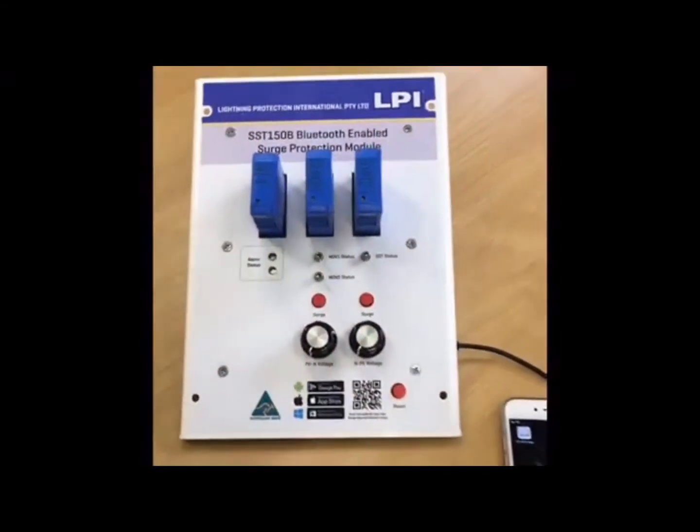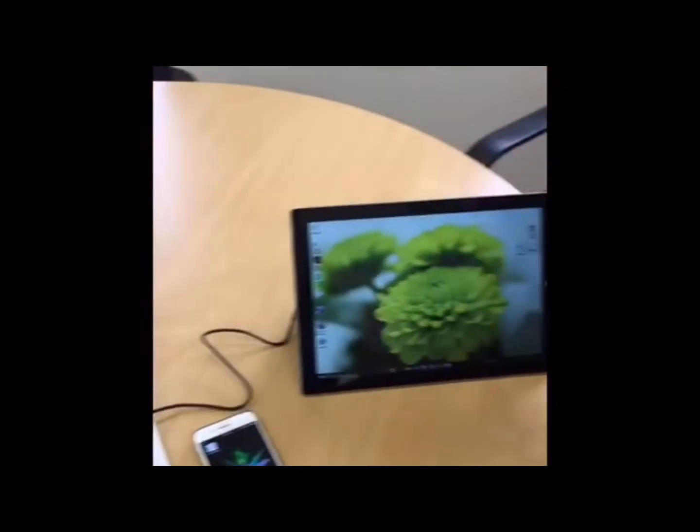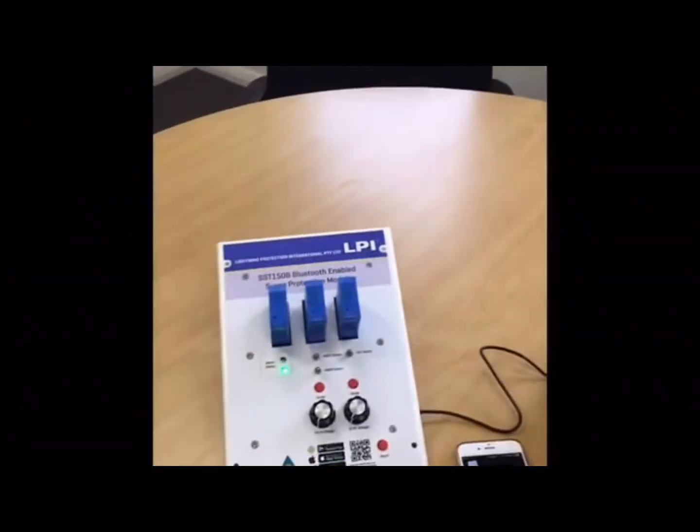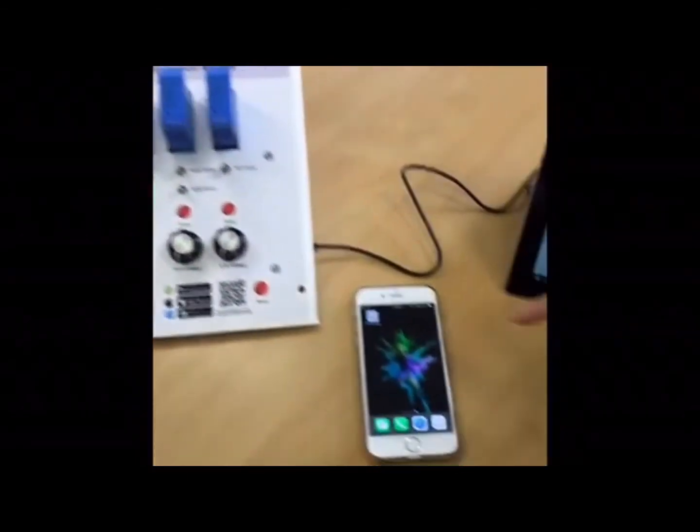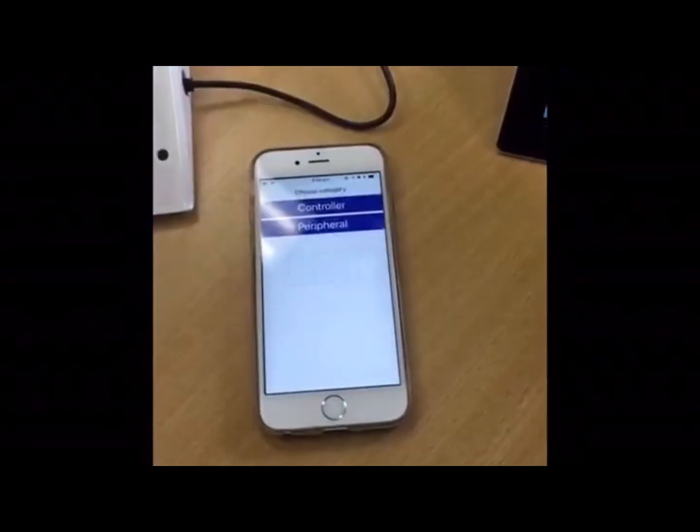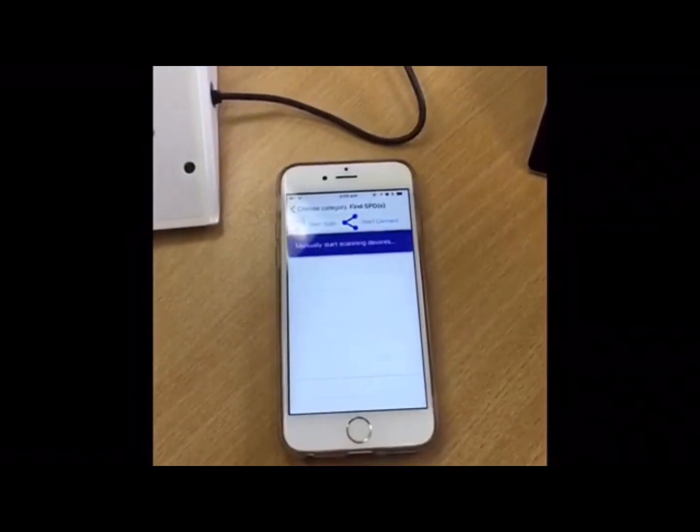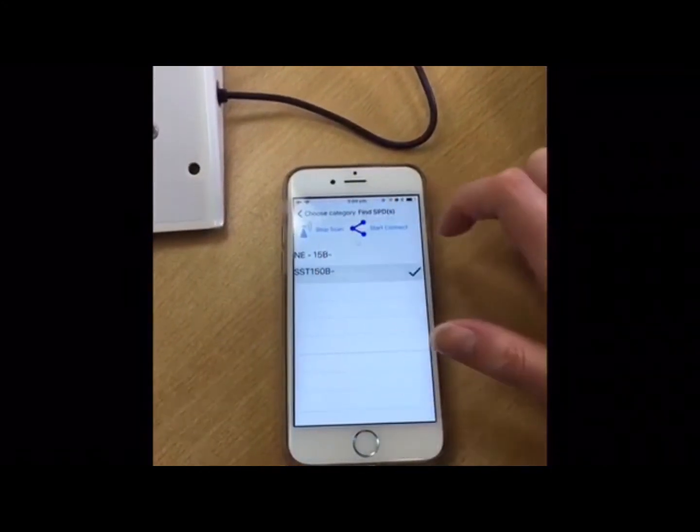First, ensure that Bluetooth is enabled on your device and you have downloaded the LPISPD app. Open the LPISPD app and select peripheral, then start scan and select SST150B and select start connect.